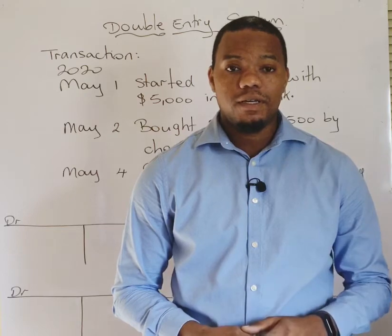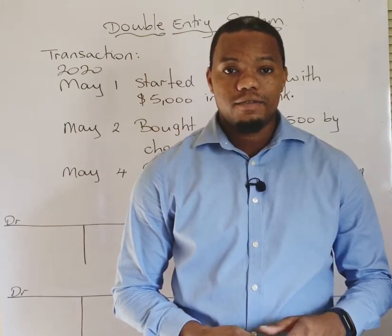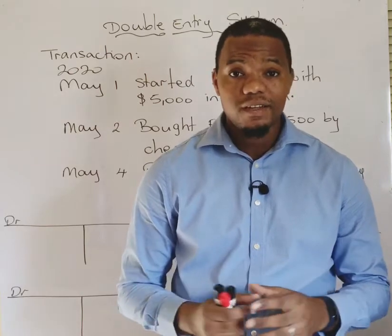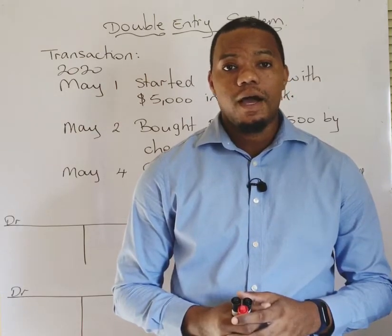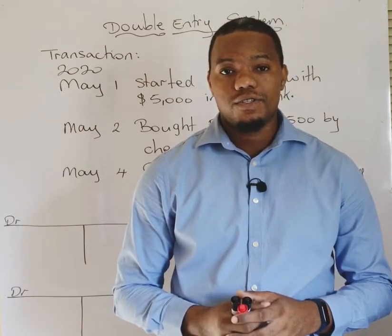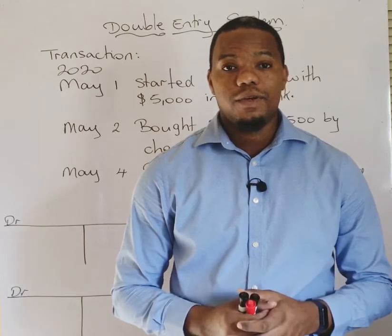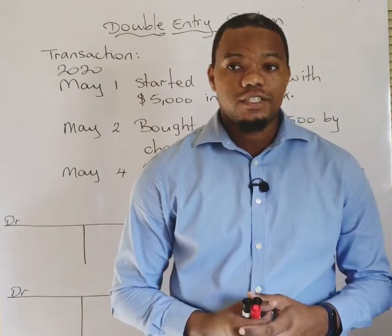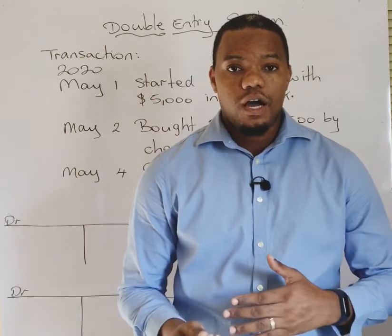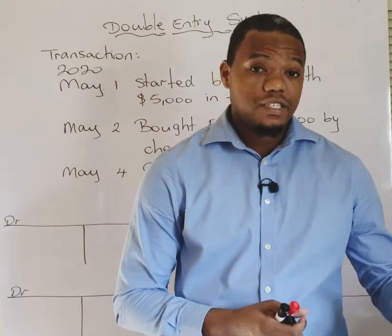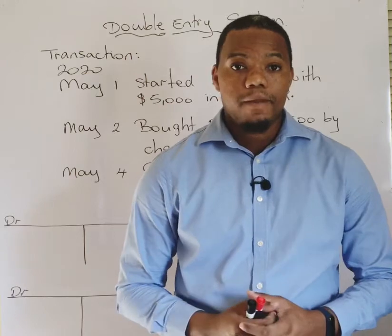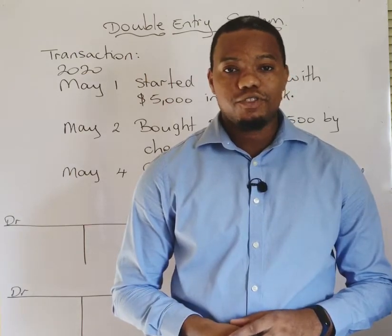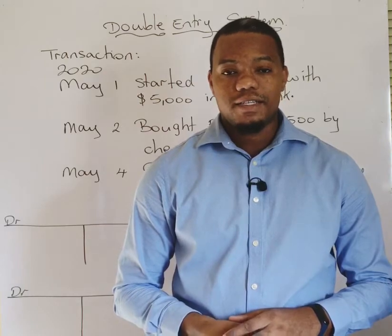One method is what we call the payment and receiving method, which is the not-so-correct method to teach double entry. There is also the correct method, which is to learn the different types of accounts and learn what you do if there's an increase and what you do if there's a decrease. Today we're going to be practicing some simple transactions.